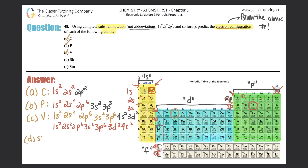Part d: Sb — antimony, number 51. We ended at 23 for vanadium, so we continue further. The beginning is the same: 1s2, 2s2, 2p6, 3s2, 3p6. Then 4s2, then cross the entire 3d row — that's 10 boxes: 3d10. Continue to number 31, which is 4p.